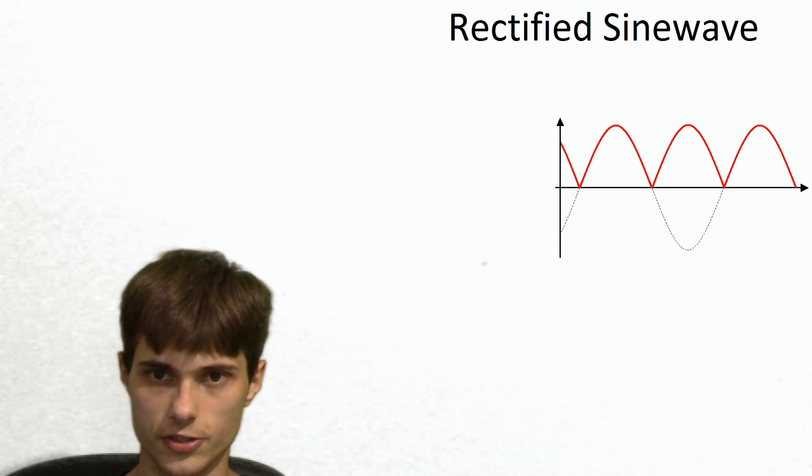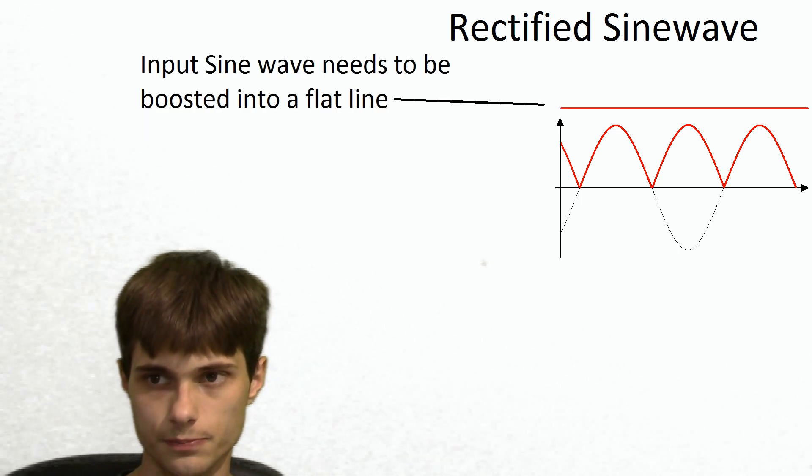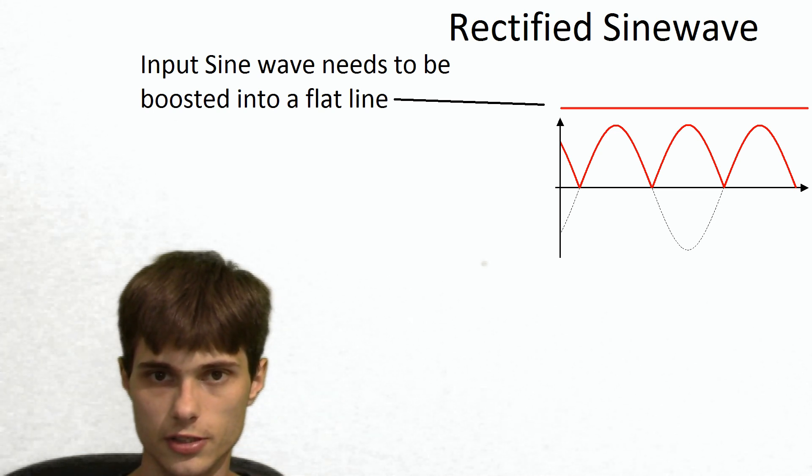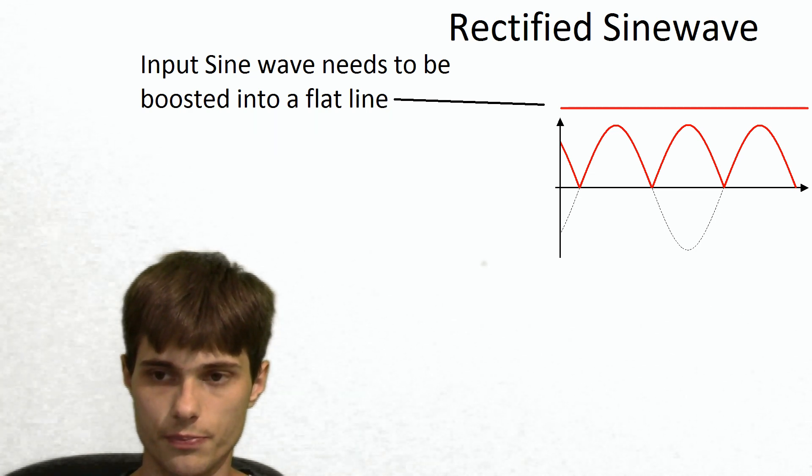So the job of the boost converter is simple, to boost up voltage. So it needs to boost up the voltage to the same voltage no matter where that lumpy DC is. So if it's at zero volts, obviously we can't boost up zero volts because it's nothing. But anywhere through that lumpy DC, we need to boost the voltage up to the same level. So it's quite simple, actually, in theory.